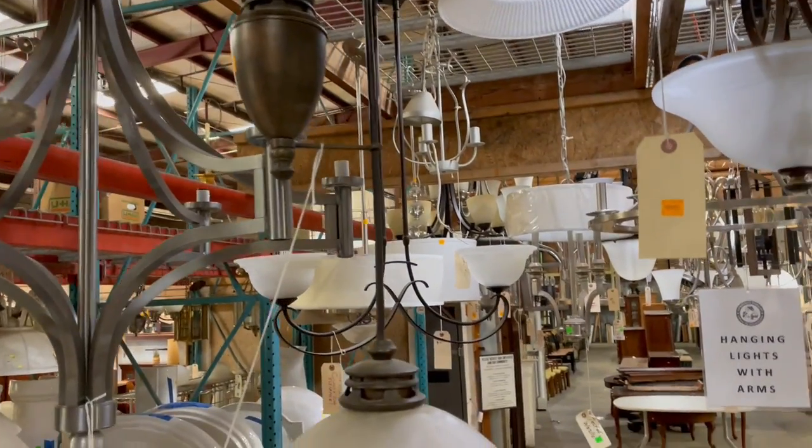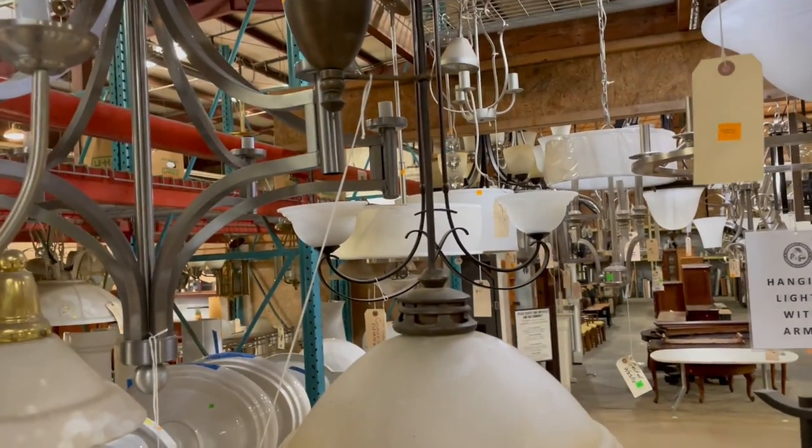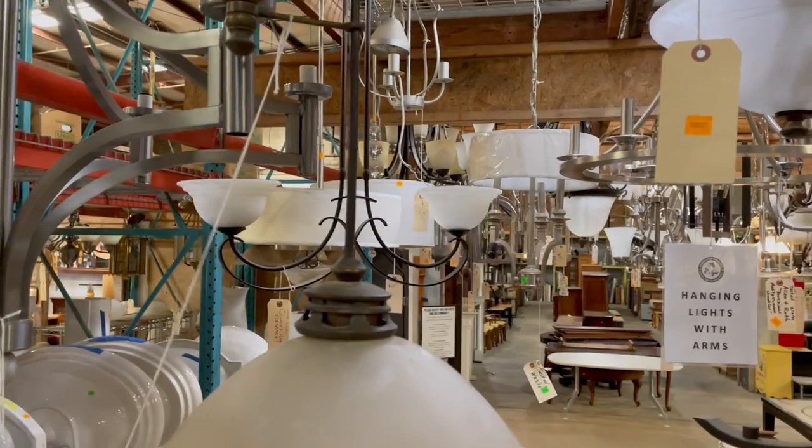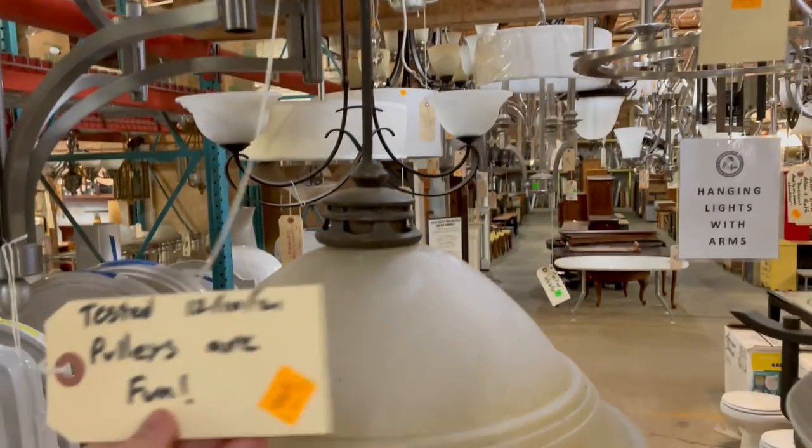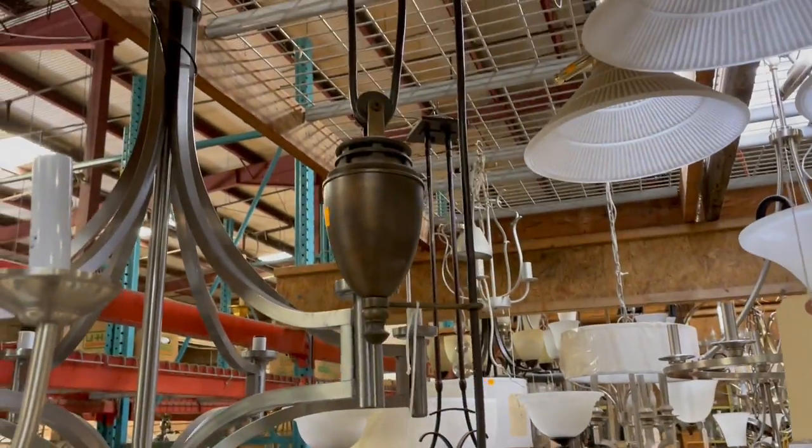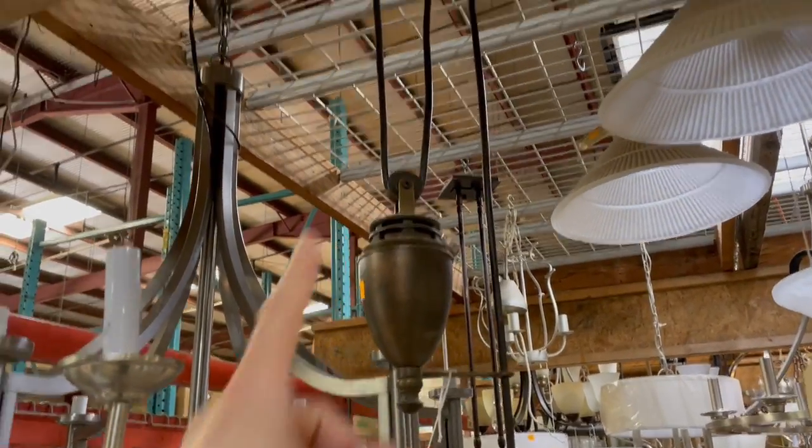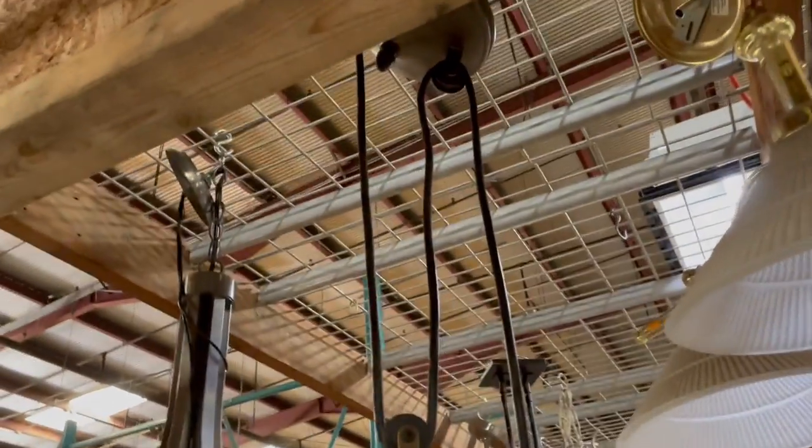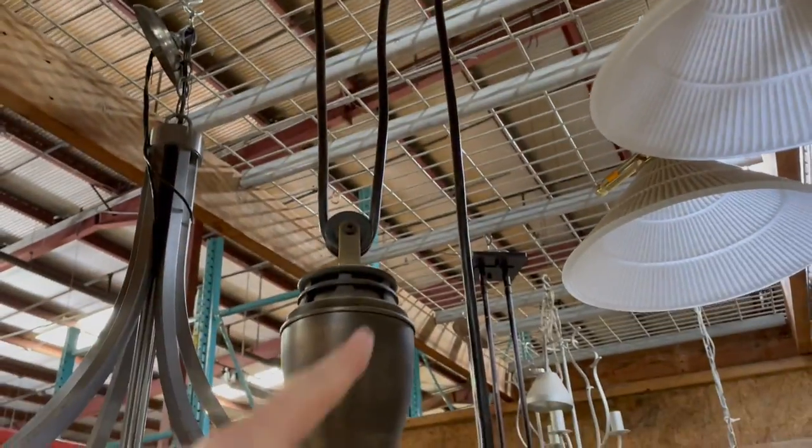couple times and didn't really notice until I read the tag: Pulleys Are Fun. It's got these adjustable pulleys and a counterweight - isn't that awesome? Look how it works: the canopy up there, the cord comes down to this weight, back up into a pulley there, and then straight down through this very helpful little clip that's attached